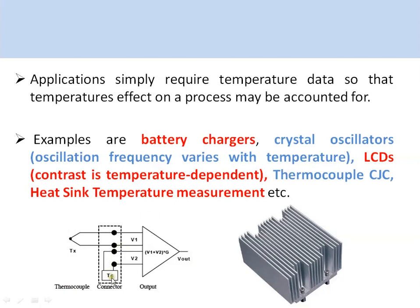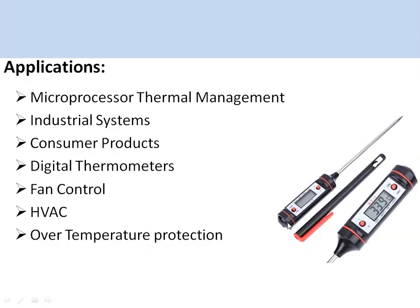The cold junction temperature is measured using an IC based sensor and then compensated. For heat sink temperature measurement, the heat sink dissipates heat from semiconductor devices like transistors or MOSFETs, and in applications where this temperature needs to be monitored, IC temperature sensors are used.